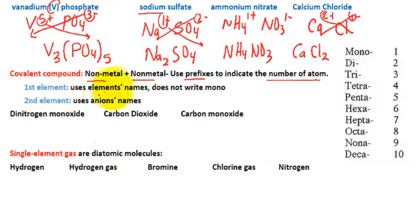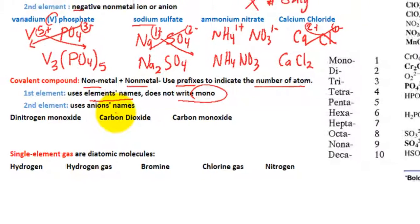Here's the naming structure. The first element uses the element names on the periodic table, but it does not write the prefix mono when you have 1. However, for the second element, it uses the anion's name.